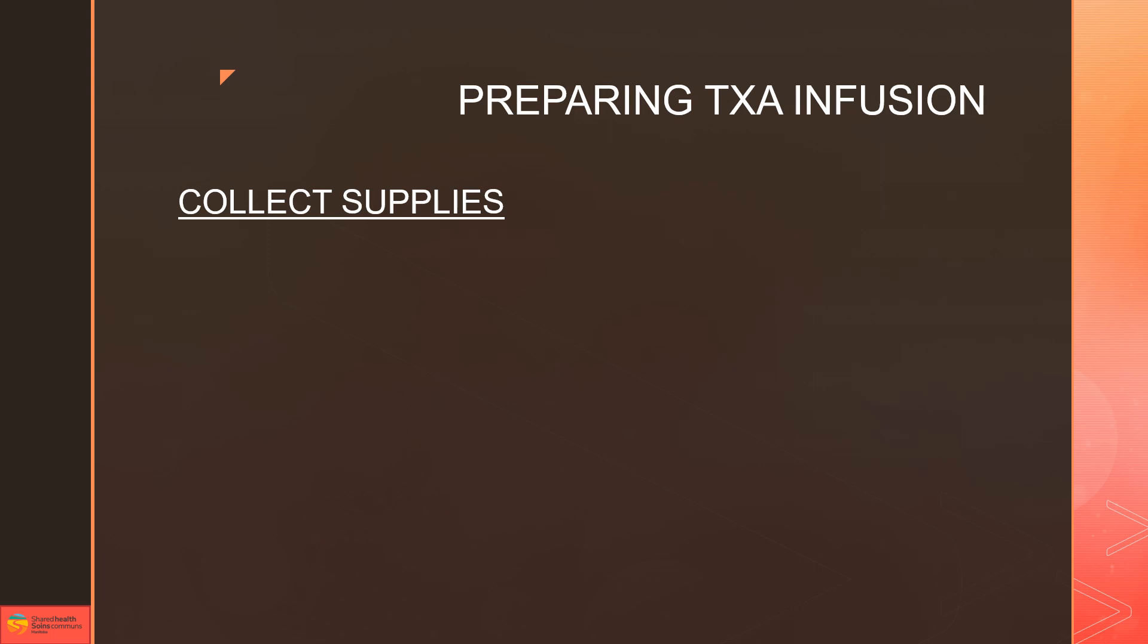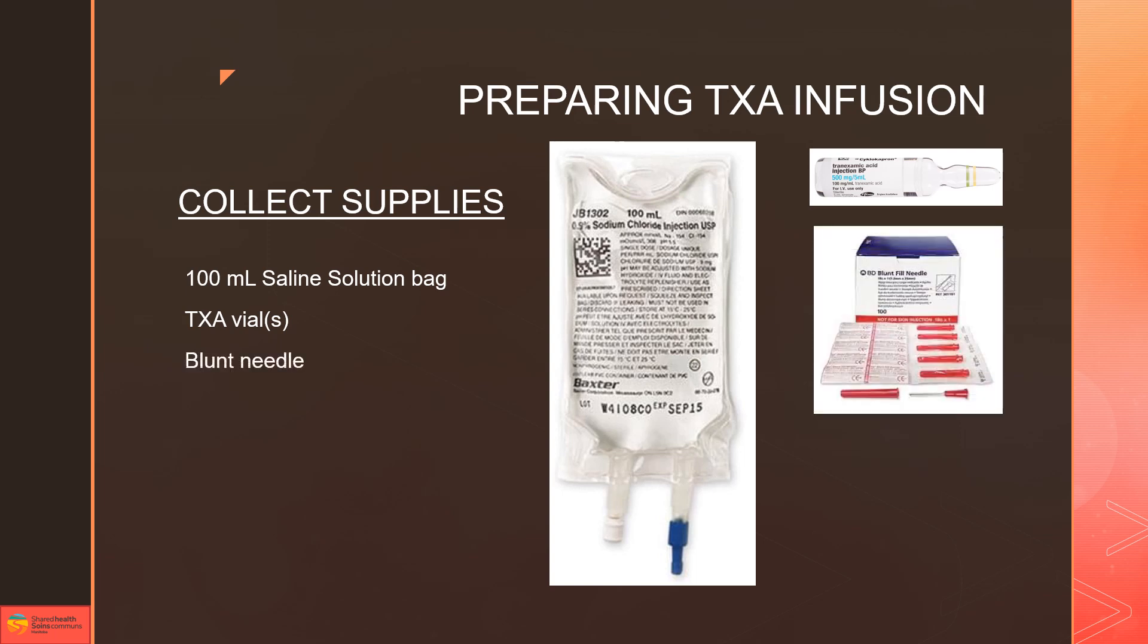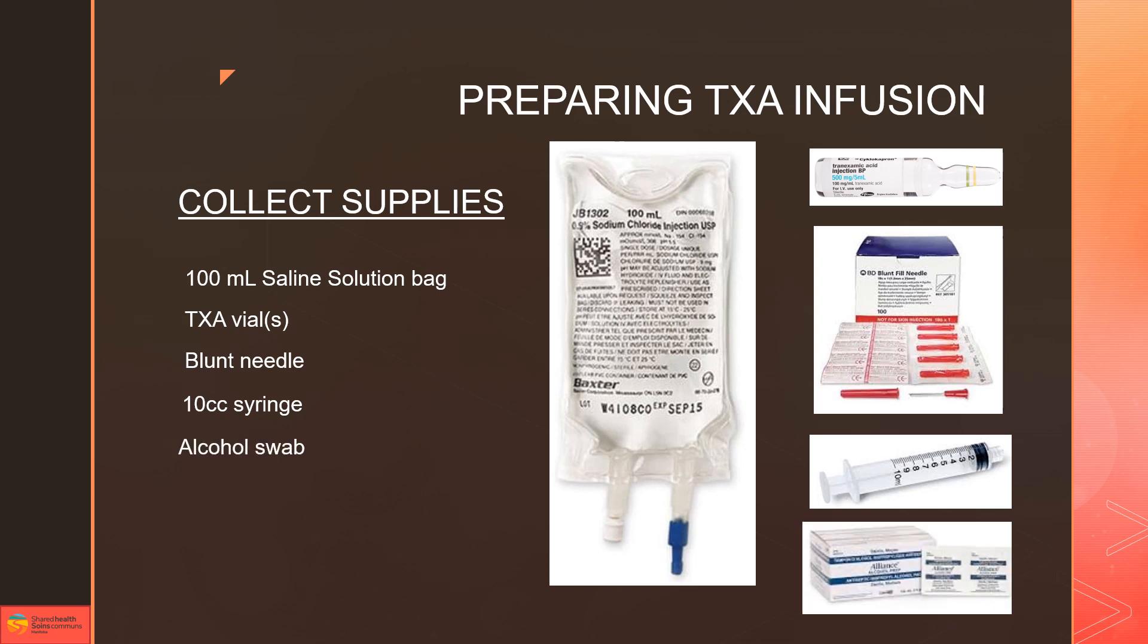To prepare the TXA infusion we're going to get our supplies together. First, get our 100 ml saline solution bag. We're going to get our TXA vials—we may need one or two vials depending on how much we want to give, especially for a pediatric patient. We're going to need our blunt needle syringe to draw the medication and put it into the bag, a 10 cc syringe to draw our medications, and an alcohol swab.